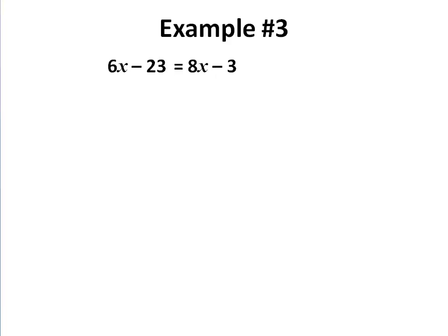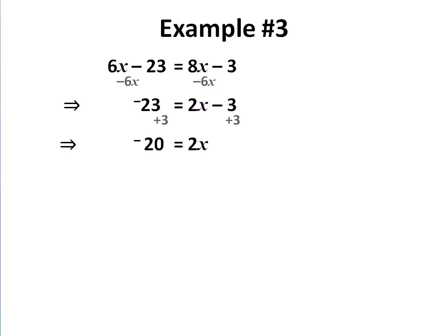As the equations get more complicated — in this case we have two unknowns and two number terms — it becomes more and more important to do it all as separate steps. Too much is happening to do it all on the same line. So in this case I'm going to choose to remove the 6x first, leaving minus 23 equals 2x plus 3. Then I'll group our number terms by adding 3, leaving minus 20 equals 2x. Divide both sides by 2, and get my answer.